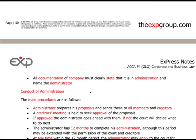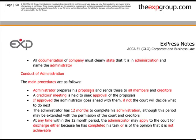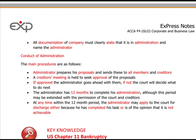Company administration allows the company time to get its books in order and its strategy sorted so it can recover. If the administrator decides after a period of time that it won't recover, liquidation will likely follow. All documentation must clearly state that the company is in administration and name the administrator. The administrator prepares proposals and sends these to all members and creditors. A creditors' meeting is held to seek approval; if approved, the administrator proceeds. The administrator has 12 months to complete the administration, which may be extended with permission of the court and creditors.